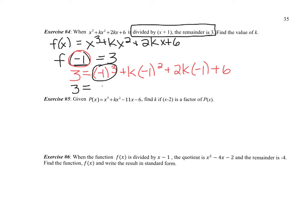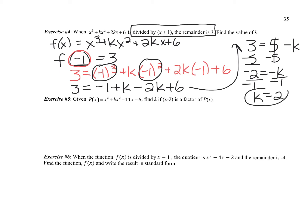So if I simplify, negative 1 cubed is negative 1. Negative 1 squared is 1, so this just becomes a k. 2 times negative 1 is negative 2, so we have negative 2k plus 6. I'm going to come over here. Combining terms on the one side, I have 3 equals 5 minus k. So I'm going to subtract 5, and I get negative k equals negative 2, divide by negative 1. So the k value equals 2.